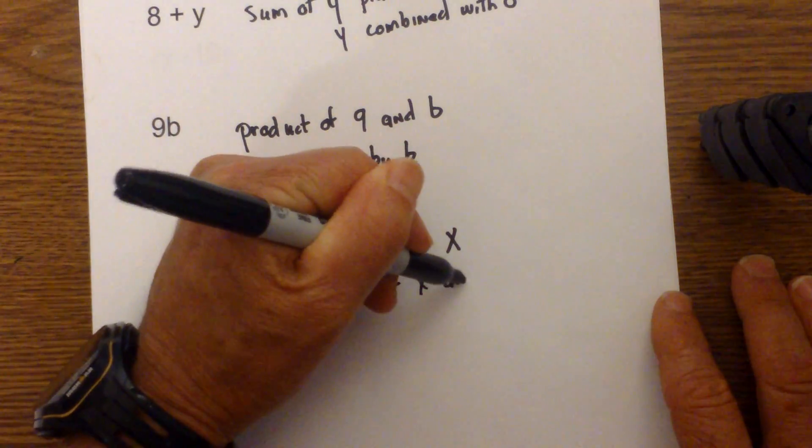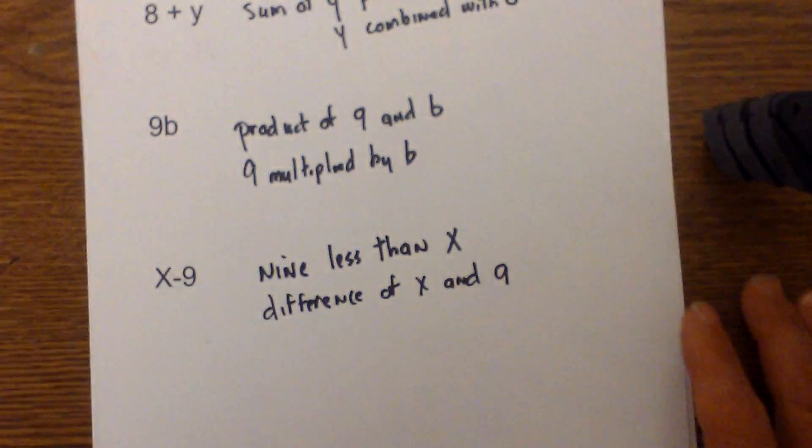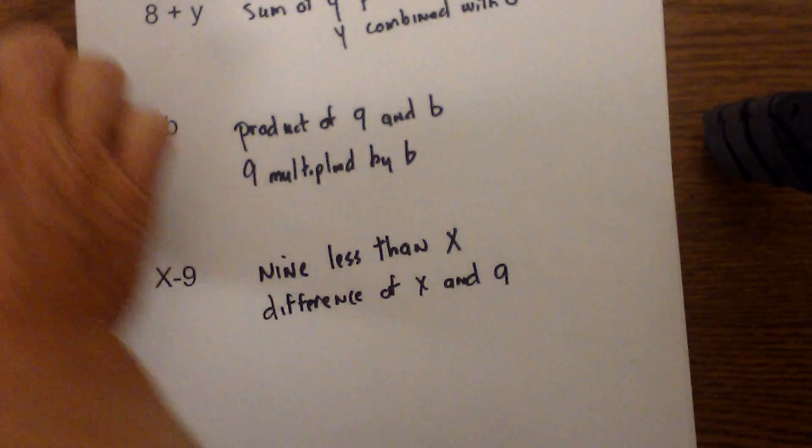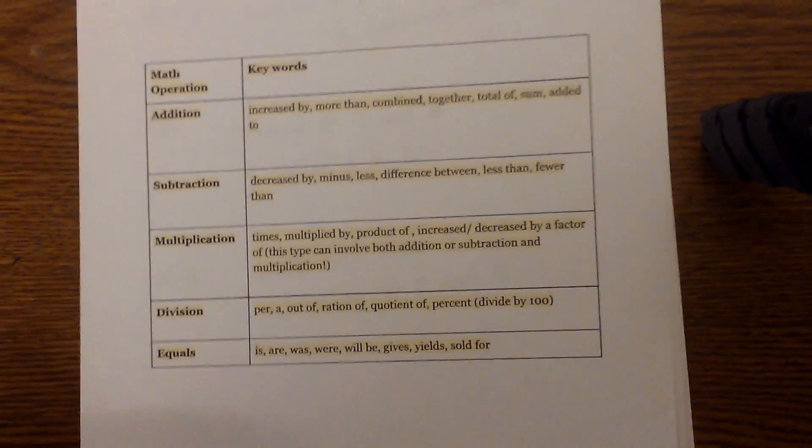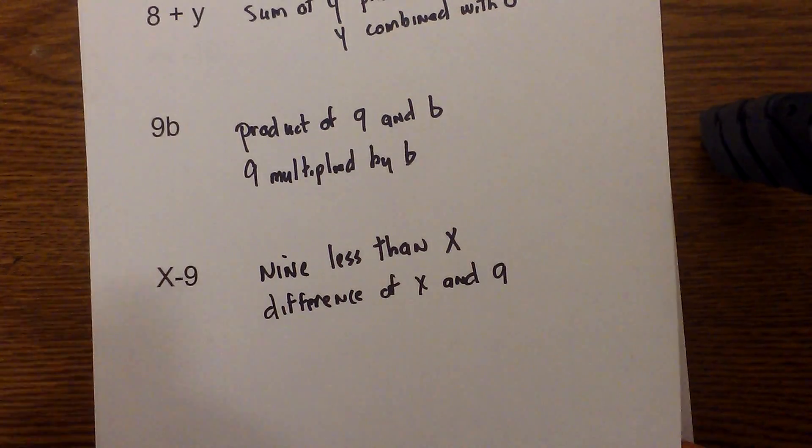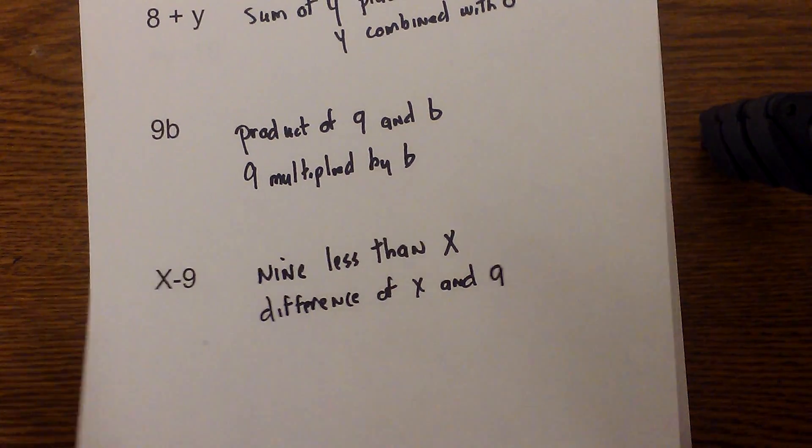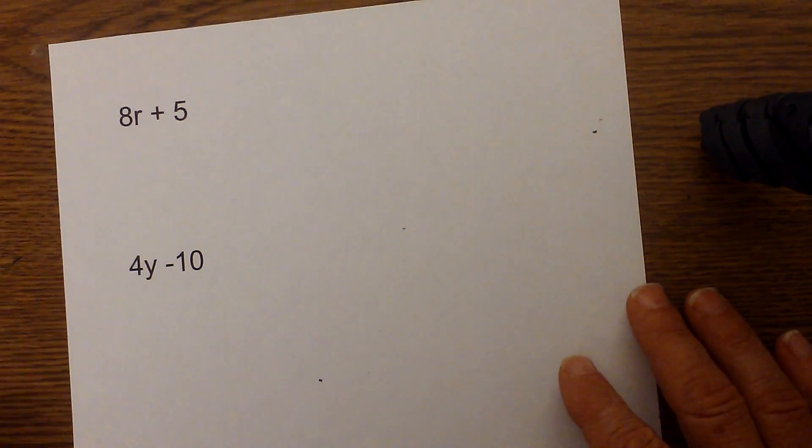Or if you don't like that, you could go difference, because difference tells you, so difference of x and nine. Again, you can just, I'm using this sheet and I'm just kind of plugging in words that represent the correct math operation.